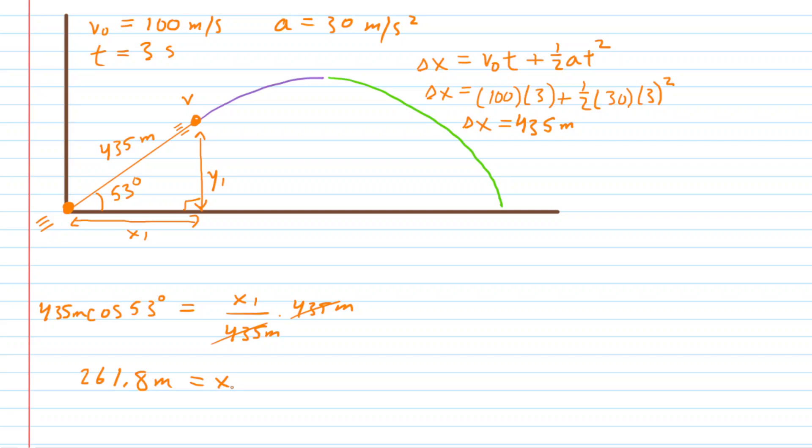We'll do something similar to find y1. Looking back at that orange right triangle, the sine of 53 degrees equals the opposite side, which is y1, over the hypotenuse, which is 435 meters. Multiplying both sides by 435, we find that y1 is about 347.4 meters.